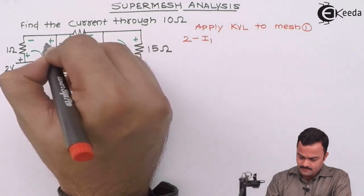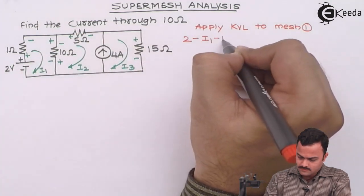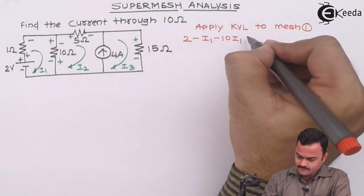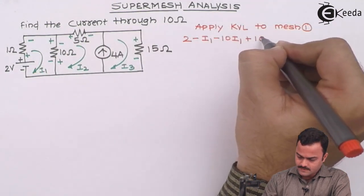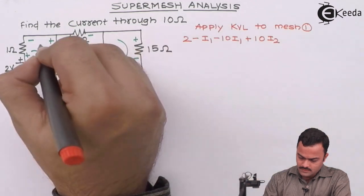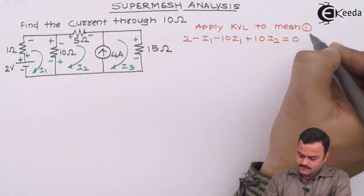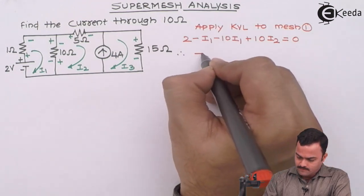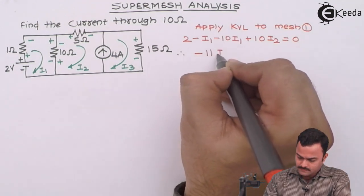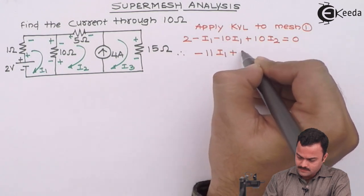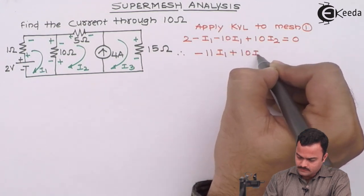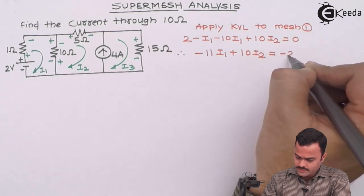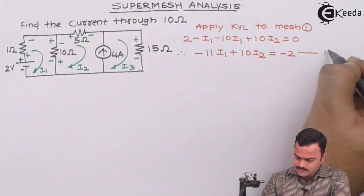Plus minus, minus 10I1, minus plus, plus 10I2, equal to 0. So after simplifying, we'll get minus 11I1 plus 10I2 equal to minus 2 as equation number 1.